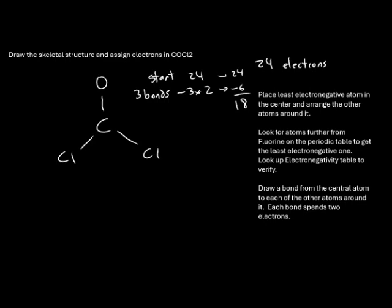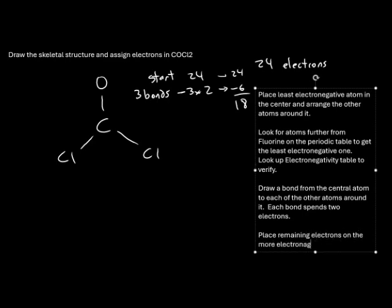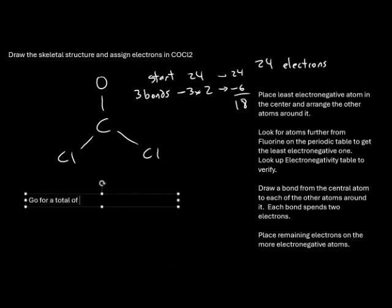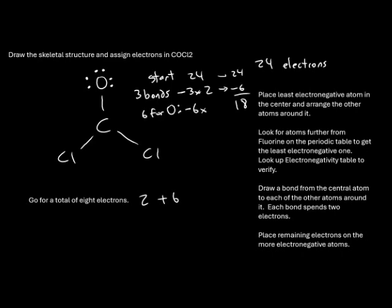Now we can place those remaining electrons on the more electronegative atoms. Oxygen is very slightly more electronegative than chlorine, so we place electrons around oxygen until we get a total of eight electrons around it. Oxygen already has two electrons from its bond, so we add six more dots. We subtract six electrons times one oxygen, leaving us with 12 remaining.